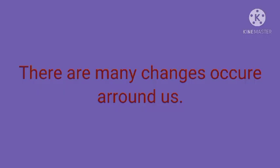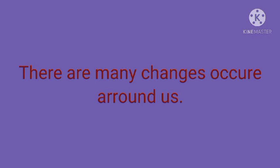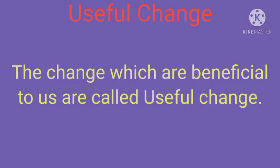Let's distinguish different types of changes around us. First is the natural change. As the name indicates, changes which occur naturally are called natural changes — nature is behind these changes. Examples of natural changes are ripening of fruits and thunderstorms.